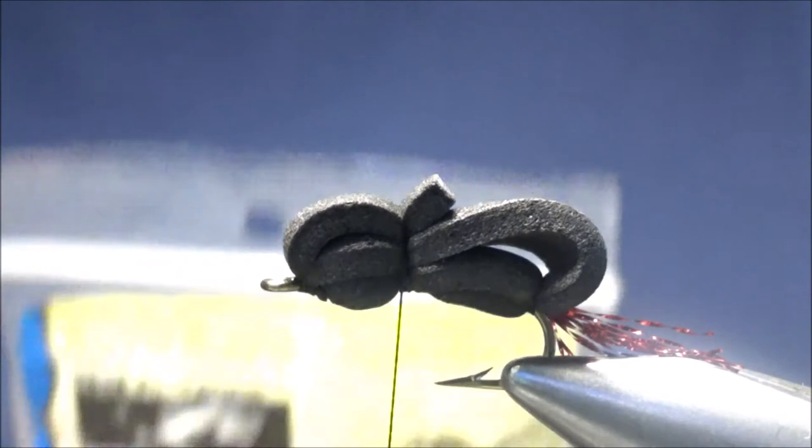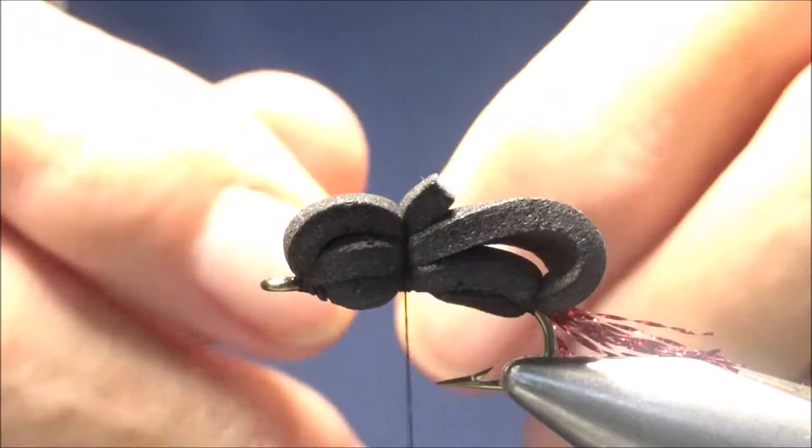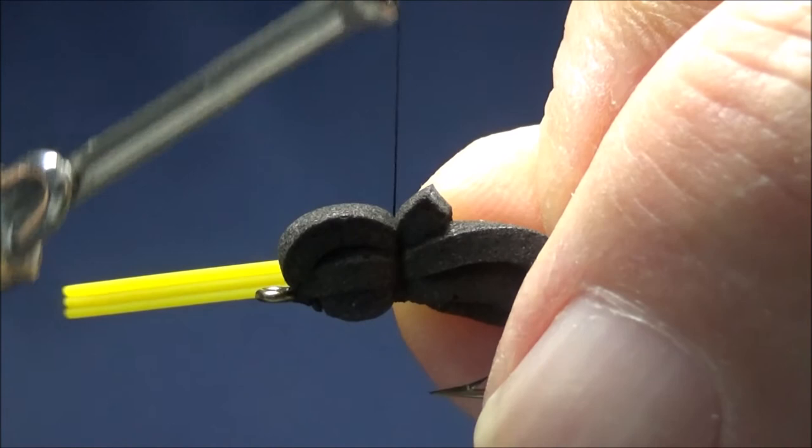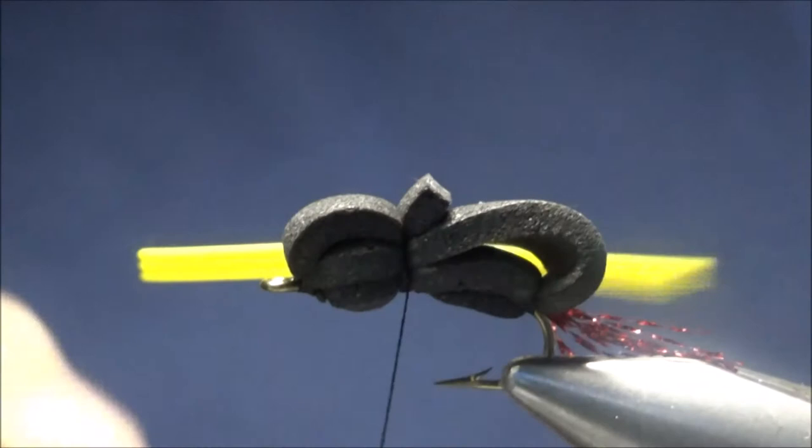Now I'm going to add some legs. For the legs I'm going to be using some yellow round rubber legs in medium. As I said, you can also use chartreuse here if you'd like. I have three strands of the round yellow. I'm going to lash it to one side, and I'm going to cut it off just a little long. We'll cut it to length in just a few minutes.